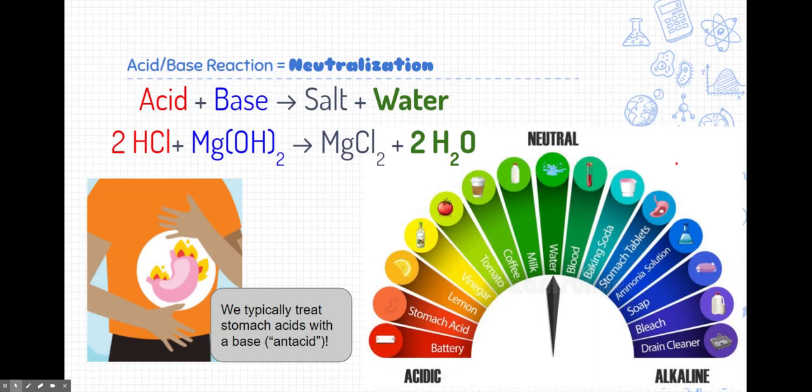Acid and base reactions basically make water. It neutralizes the solution. You're probably familiar with this if you've ever had a stomach pain or with stomach acid. You might have taken an antacid. Typically, we treat stomach acids with a base. So here, for example, we have hydrochloric acid and magnesium hydroxide, a common substance found in many antacids. When those two substances go through something called the double replacement reaction, they typically create a salt and water. Notice again where water is on the pH scale. It's neutral. So this is a great way to treat stomach acids.